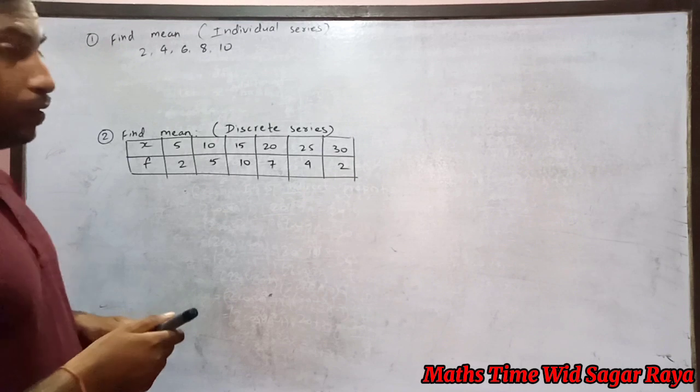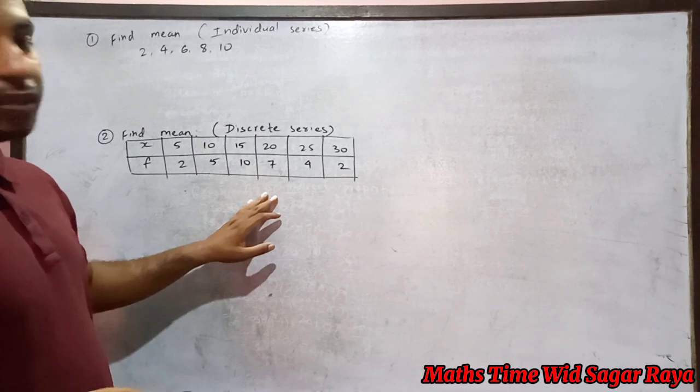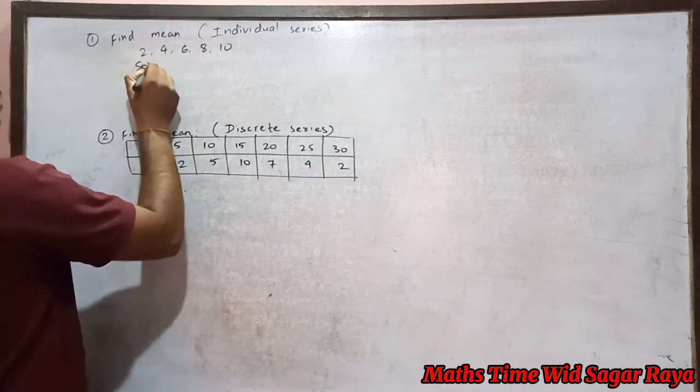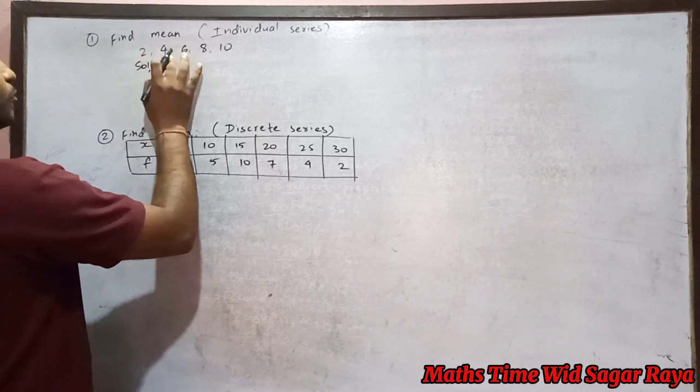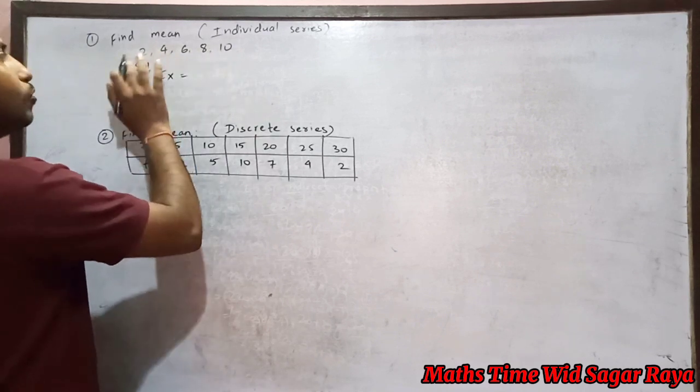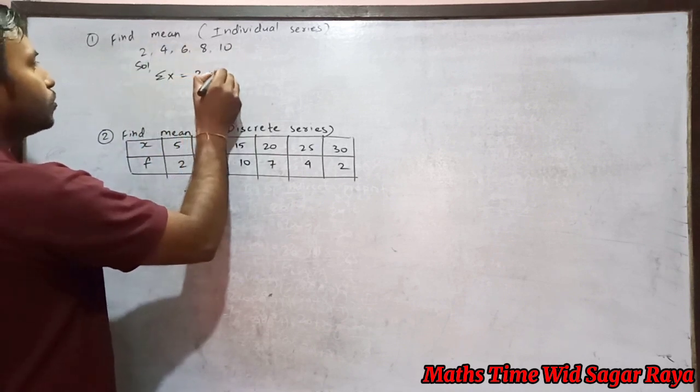You have to use the formula. For individual series there is different formula and for discrete series there is different formula. First you have to find sigma x, which means sum of all the data. Sum of all the data means just add 2 plus 4 plus